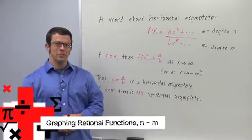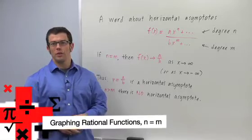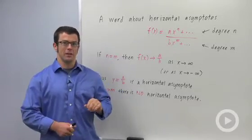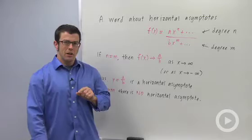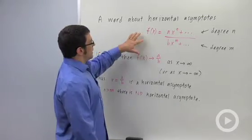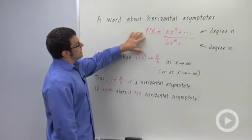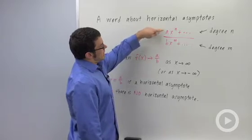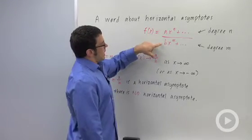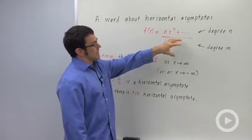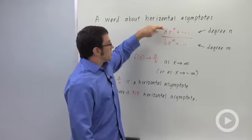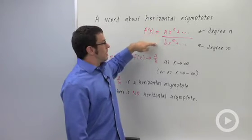I want to talk about graphing rational functions when the degree of the numerator is the same as the degree of the denominator. Let's talk a little bit about what the horizontal asymptote is going to be in that instance. If f of x is ax to the n plus dot dot dot over bx to the m plus dot dot dot, these are our leading terms for the numerator and denominator.